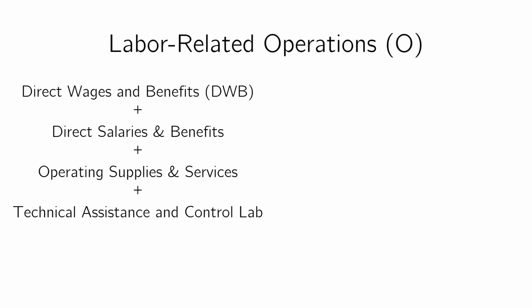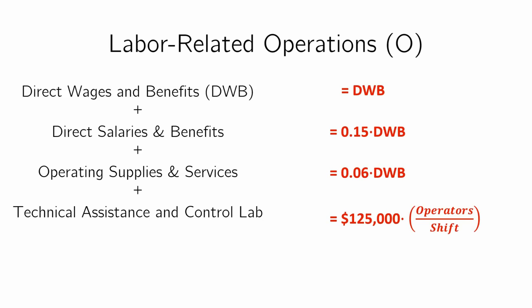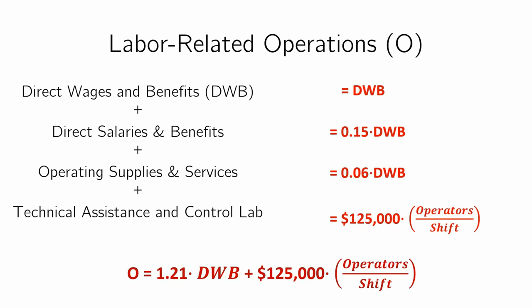To approximate the cost of O, we approximate each of the four factors as a factor of DWB. The first is simply DWB by definition. The second is 15% of DWB. The third is 6% of DWB. The fourth is $125,000 times the number of operators per shift. Adding them all up, O equals 1.21 times DWB, plus $125,000 times operators per shift.